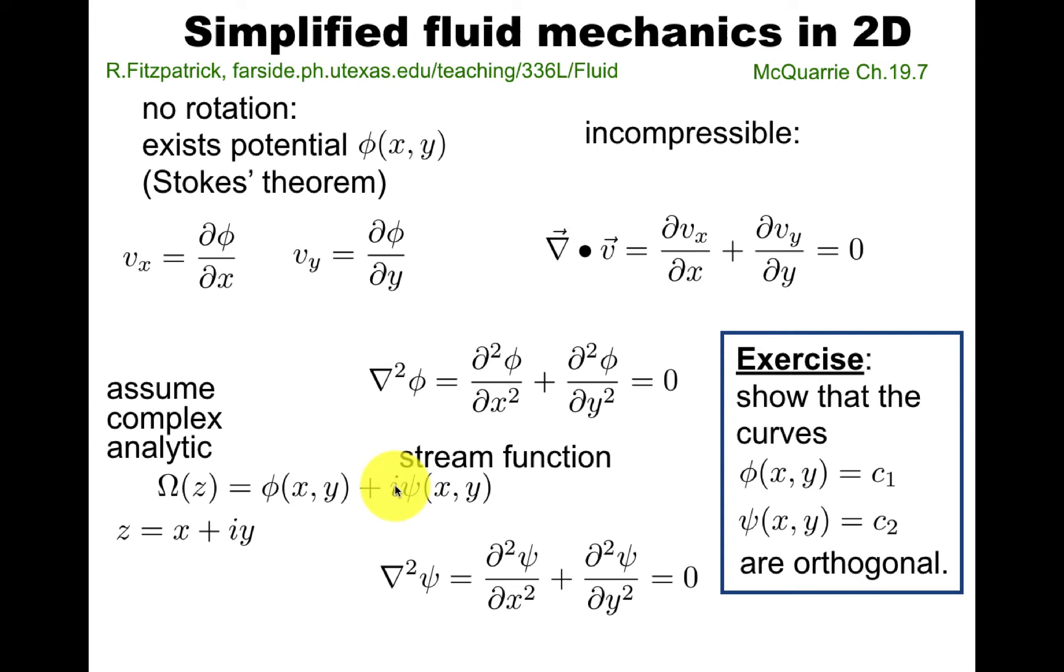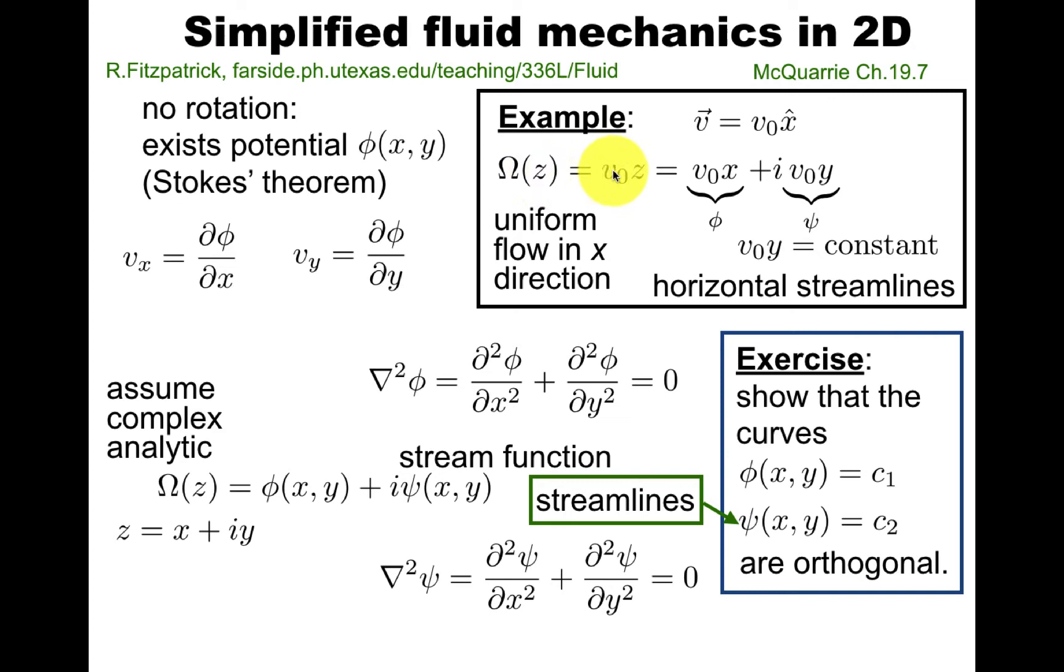More physically, here's an example. If you set Ω(z) to a constant v0 times z, so just a linear complex function, then this has these real and imaginary parts. So we immediately read off that the velocity field vx, vy, only has an x component.